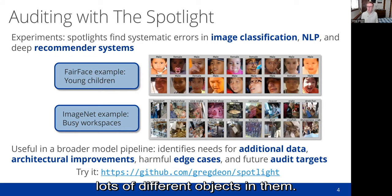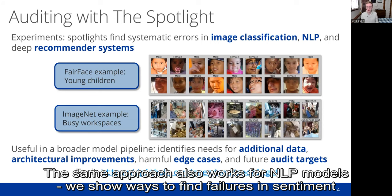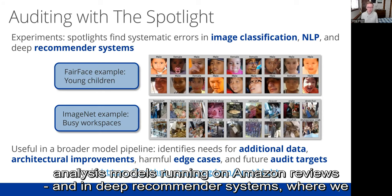The same approach also works for NLP models. We show ways to find failures in sentiment analysis models running on Amazon reviews, and in deep recommender systems where we find the sorts of movie reviews that are difficult to predict.